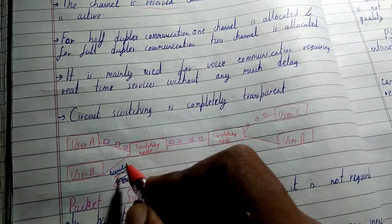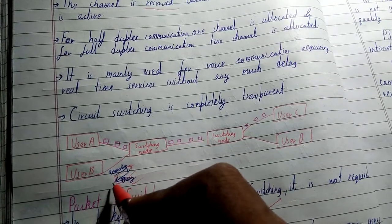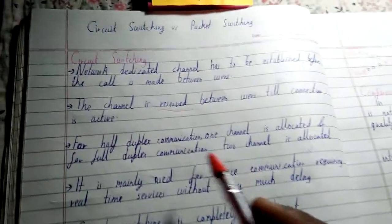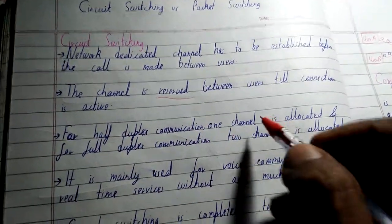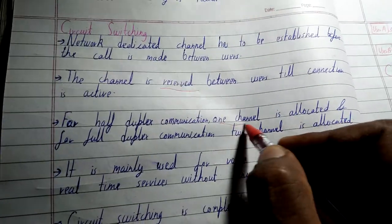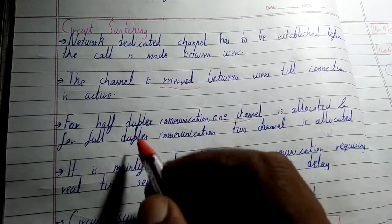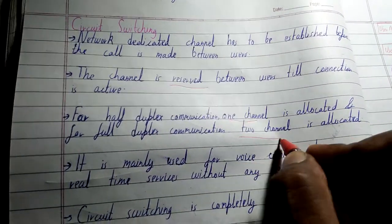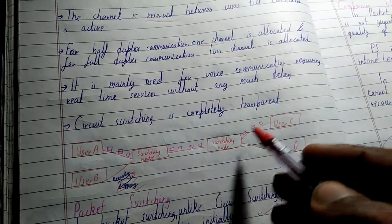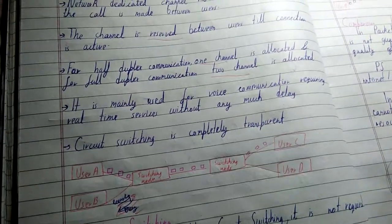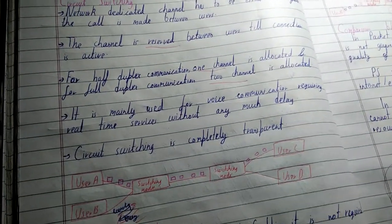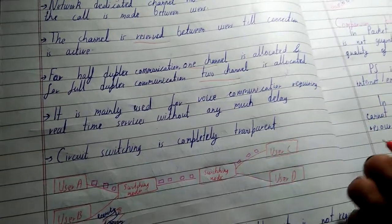So if user B requests a connection, it will get a busy signal till the connection is active. For half duplex communication, one channel is allocated, and for full duplex communication, two channels are allocated. As you can see in the diagram, only one channel is allocated, so this is a kind of half duplex communication, but for full duplex, two channels are allocated.